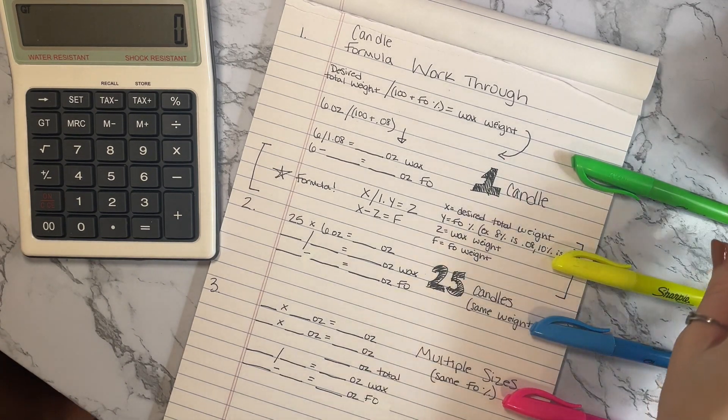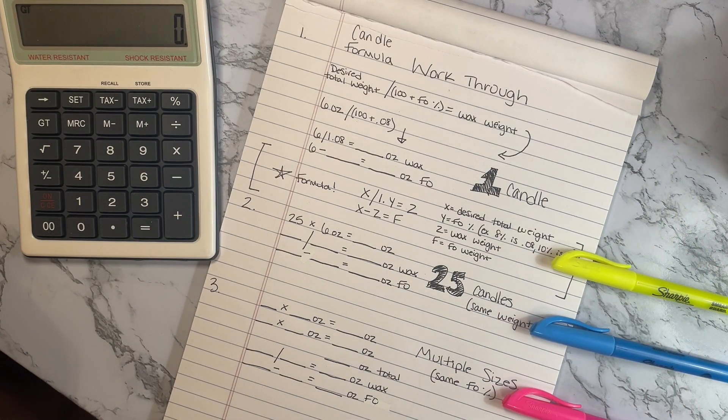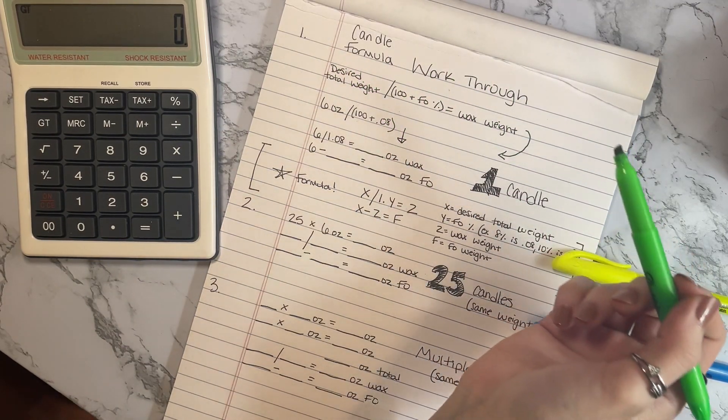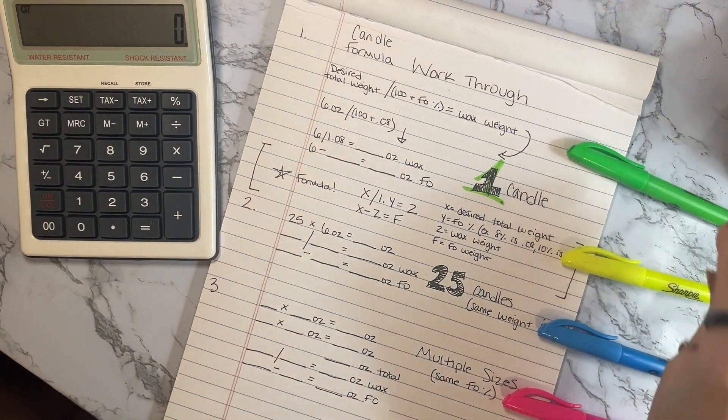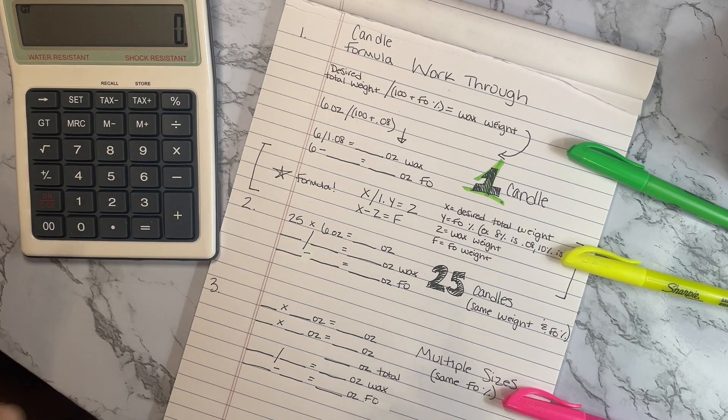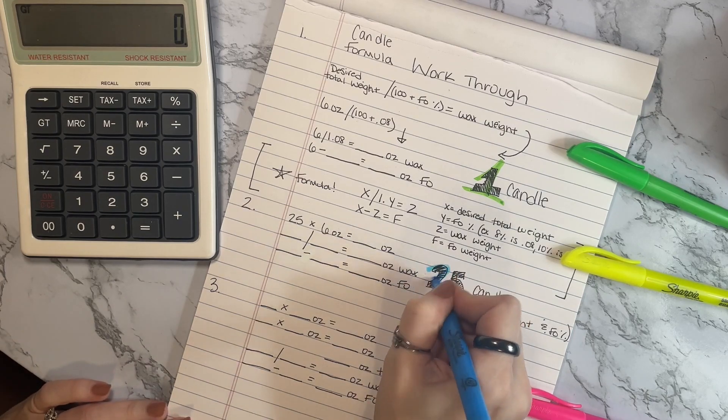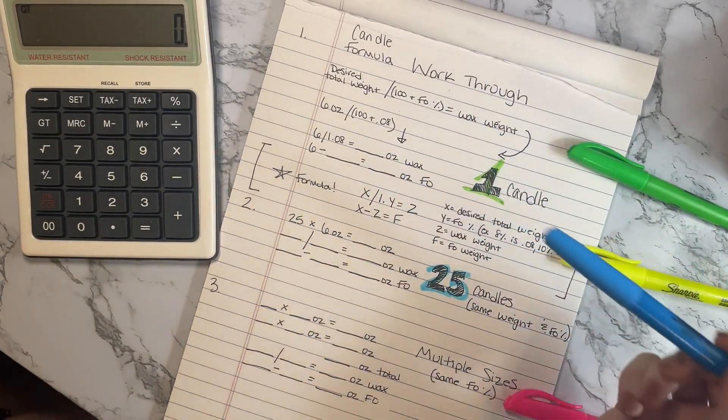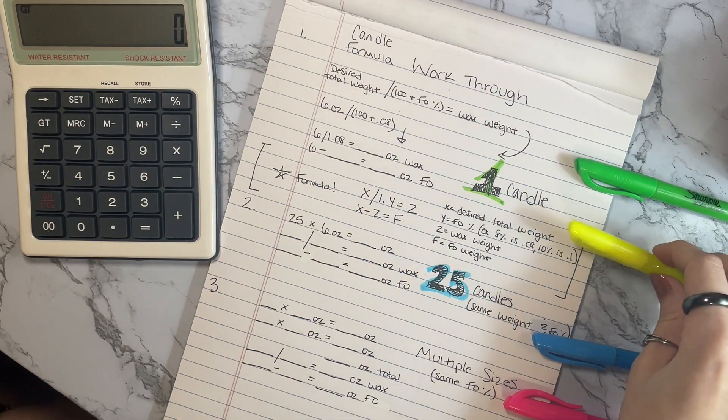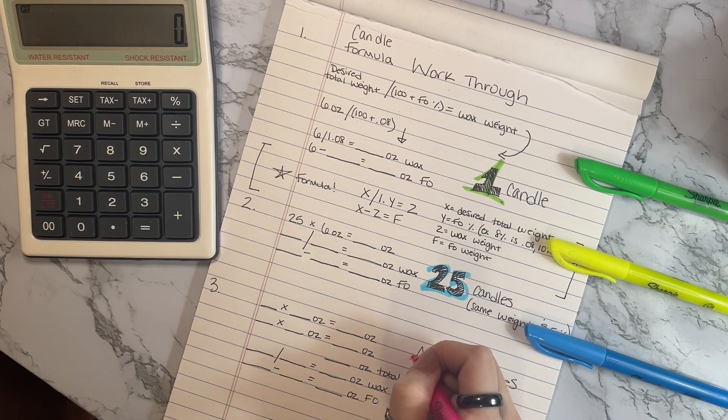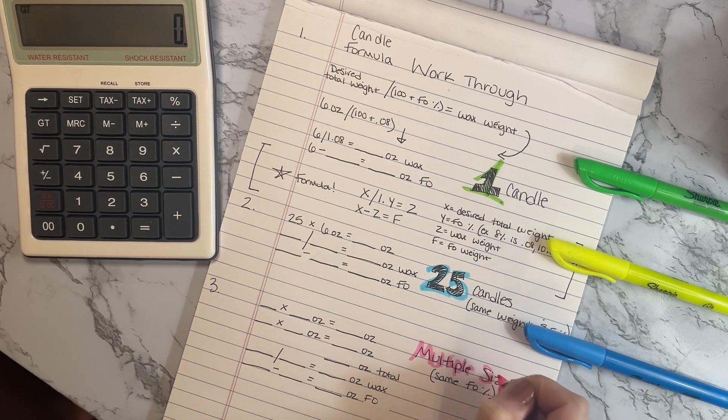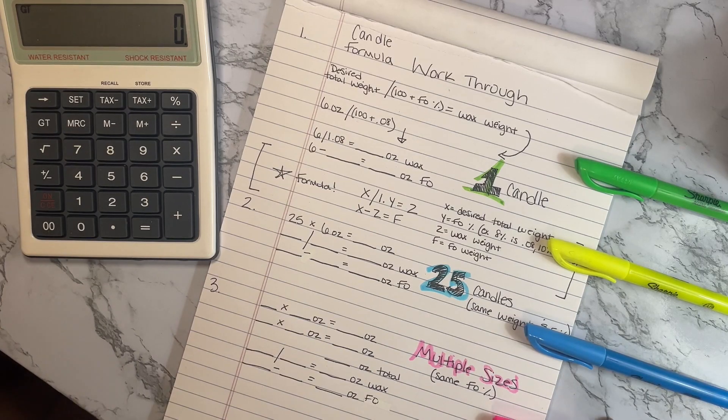I'm going to just kind of quickly go over it with y'all and then go into other examples. First I'm going to walk you guys through the candle formula and we're just going to do one candle math. Then secondly, I'm going to walk you guys through how to do a large amount of candles that are all the same weight and the same fragrance oil percentage. I'm just going to use 25 as an example. And then third, I'm going to show y'all if you are using the same formula and the same fragrance oil percentage but you're using multiple different vessels with different weights.